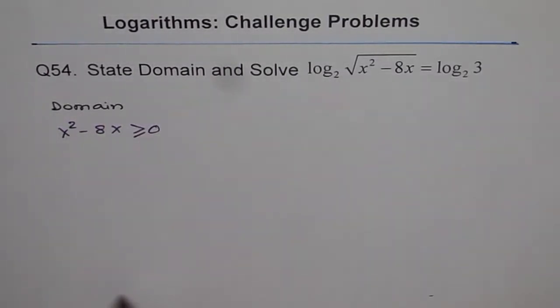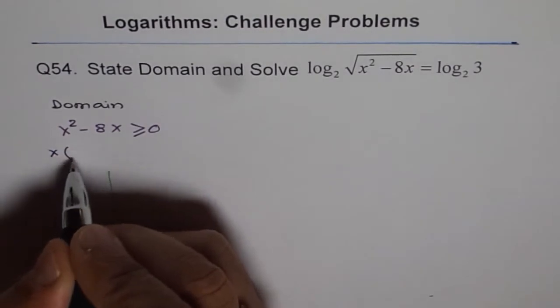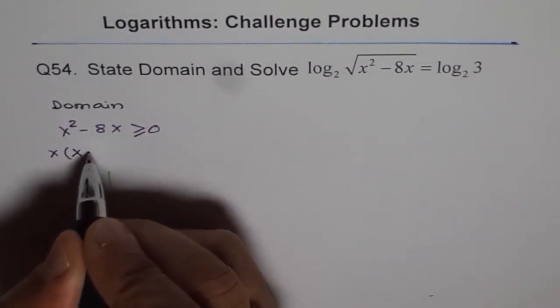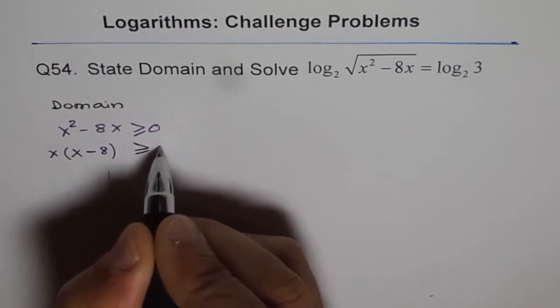Now, we can also do it graphically. I find it very interesting and useful to do graphically because I can show you what exactly I'm doing. So, I can write this, we can factor this out and we can say, well, this is x times x minus 8 greater than or equal to 0, right?